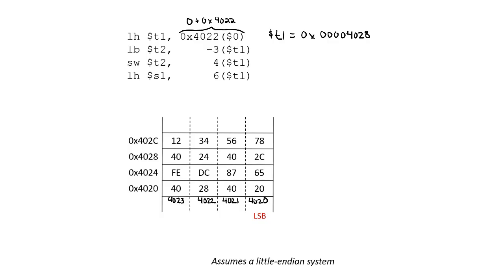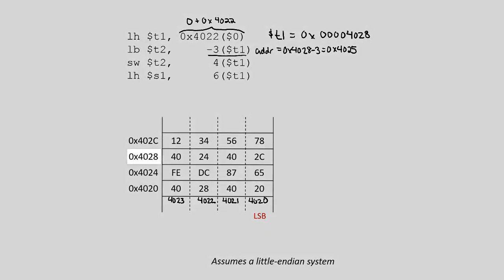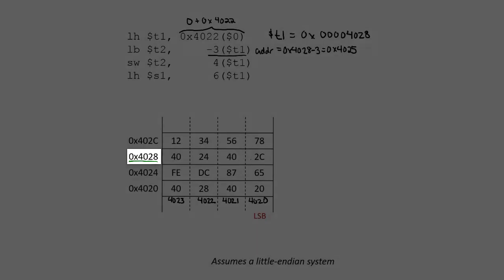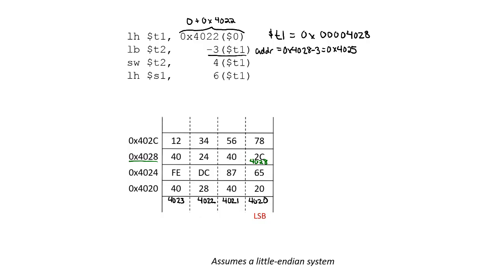The next instruction is a load byte, meaning that it's going to load a single byte from memory. Its address is a combination of what's in T1 minus the value 3. Since T1 is 0x4028, 4028 minus 3 means we're going to load from address 0x4025. We can work backwards from 4028: 4027, 4026, and then finally 0x4025, which is the cell we're going to be loading from.